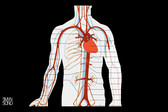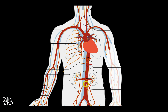When evaluating the aorta for a dissection, you can easily see the root and most of the ascending aorta. Occasionally you can see the arch, and you can also see the descending aorta. The abdominal aorta is pretty easy to see most of the time.